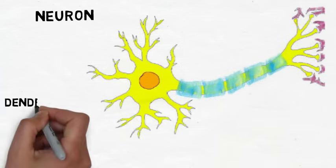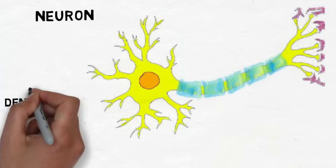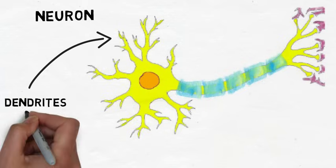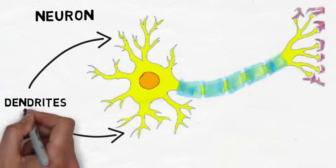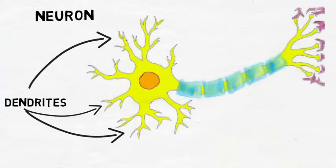The structures extending from the left side of the neuron that look a little bit like tree branches are called dendrites. Dendrites are the area where neurons receive most of their information. There are receptors on dendrites that are designed to pick up signals from other neurons that come in the form of chemicals called neurotransmitters.